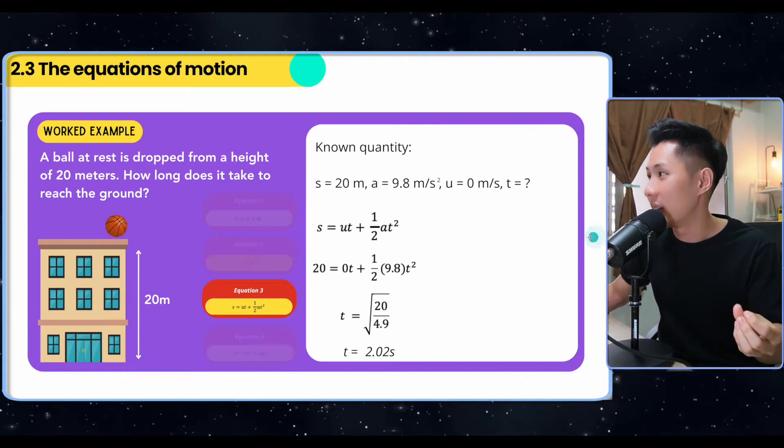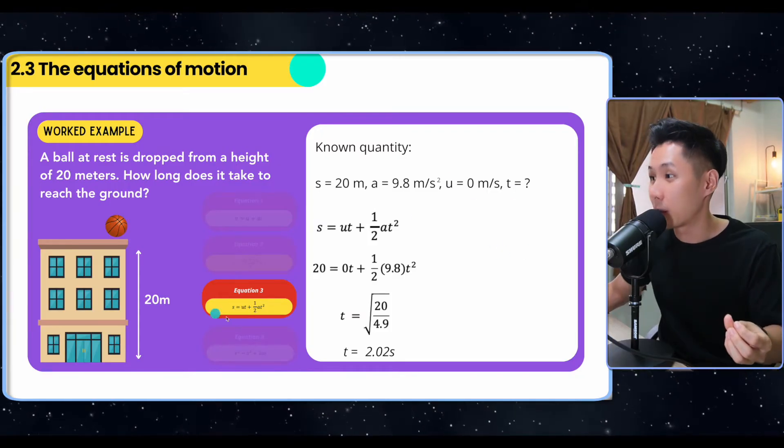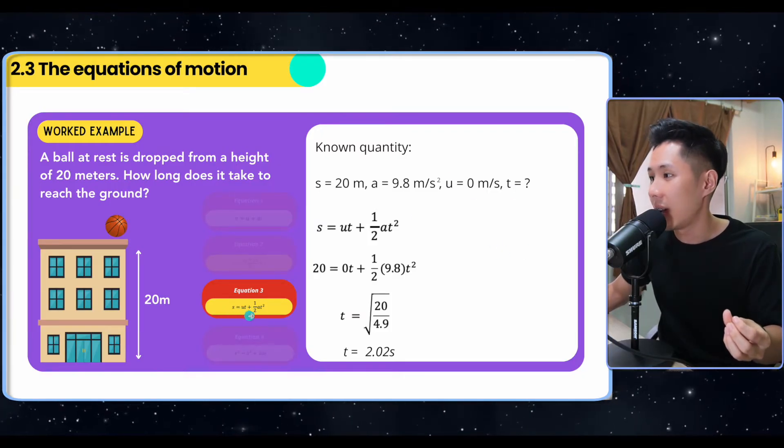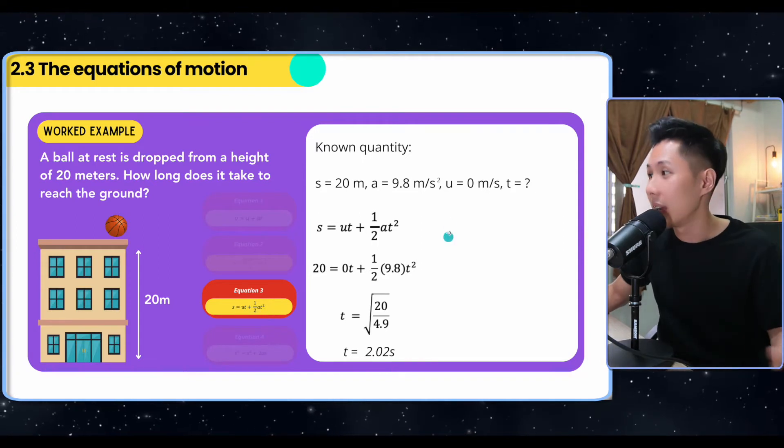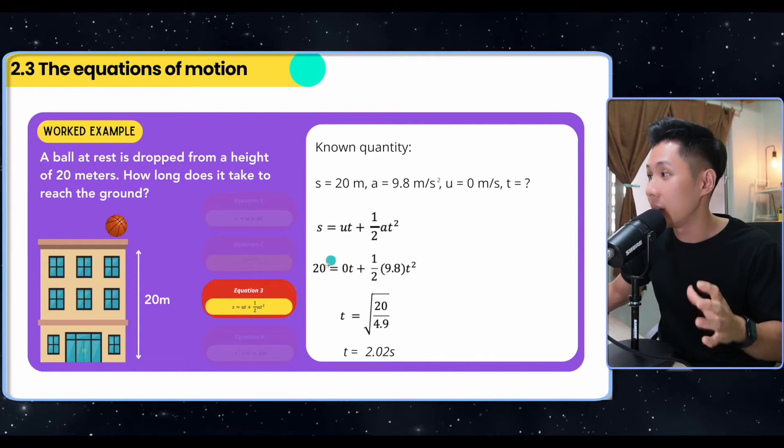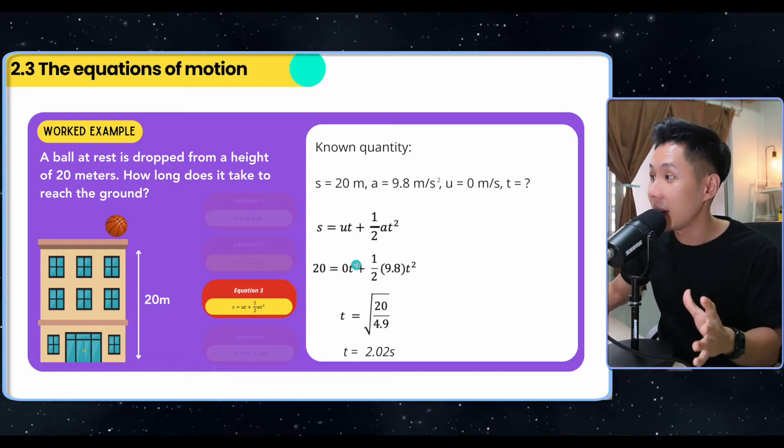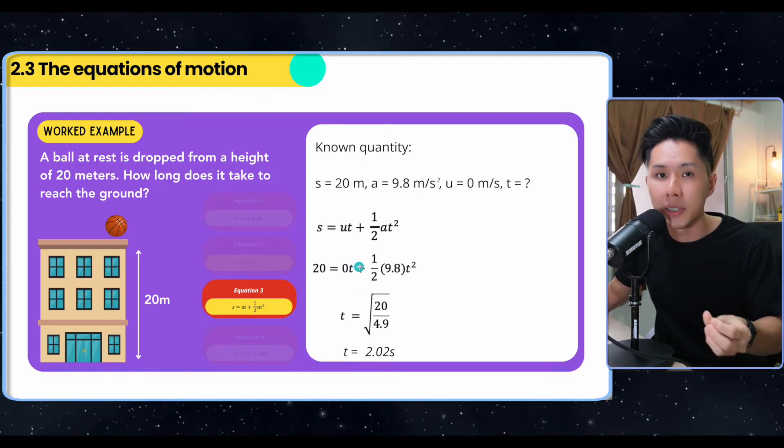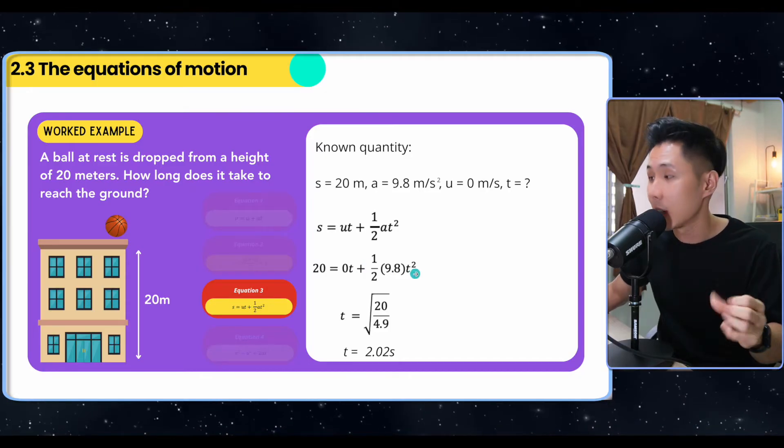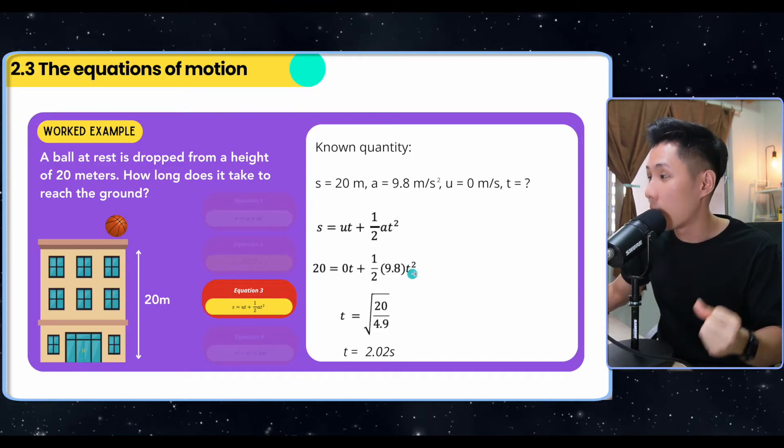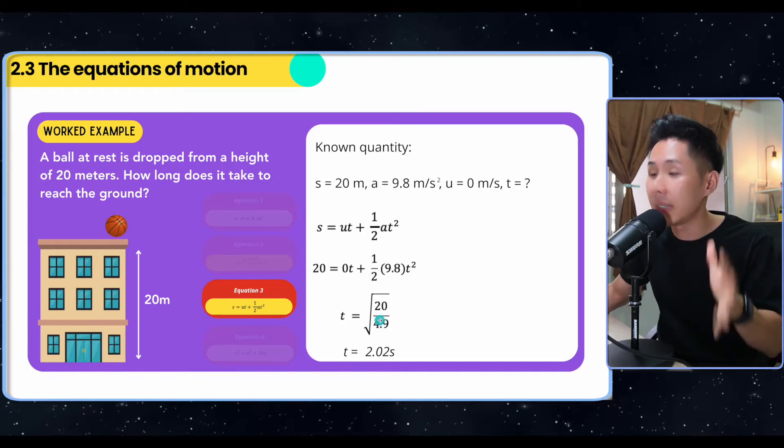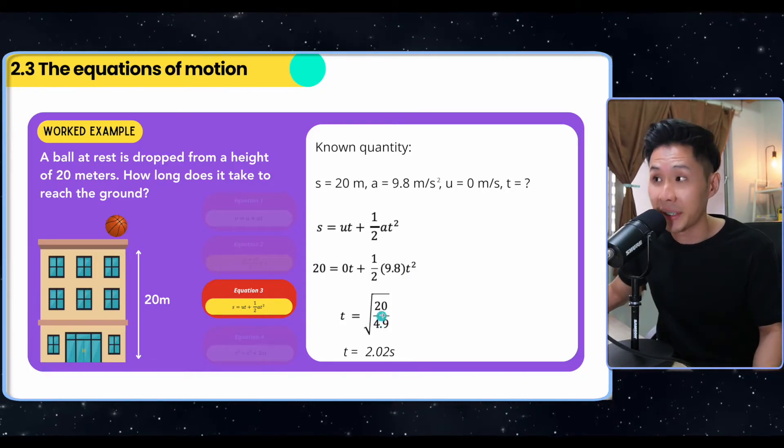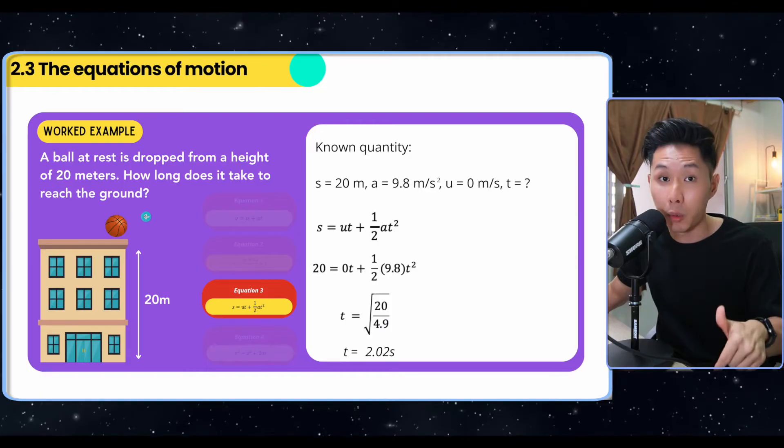So I'm going to give you two seconds. One, two, boom. The equation that has all these values is equation three. You have S, you have U, you have T, and you have A. So all you need to do is just substitute the value into these equations and find the unknown value T. So I'm not going to go through the linear algebra of this question, because I think that's mathematics. So after you have solved all the questions, substitute values, you should have found that T is equal to 2.02 seconds. It takes two seconds for the basketball to fall.